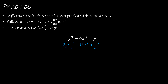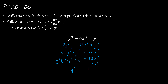Collect all the y primes to one side: 3y squared y prime minus y prime equals 12x squared. Factor out y prime: y prime times (3y squared minus 1) equals 12x squared. Then solve for y prime: y prime equals 12x squared divided by (3y squared minus 1). That's my final solution.